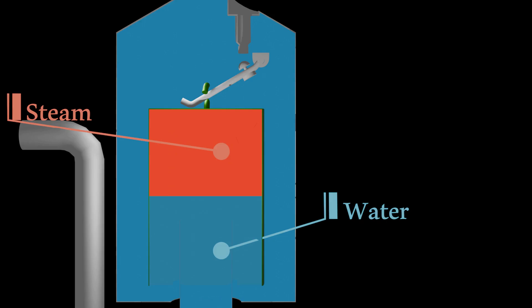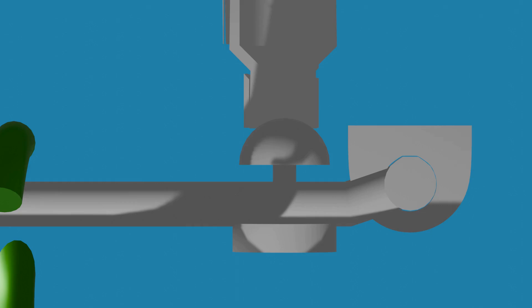When steam fills about two-thirds of the bucket, the bucket starts to rise. The reason for this is going to be discussed later in the video. When the bucket rises up, it closes the valve and no fluid exits from the trap.